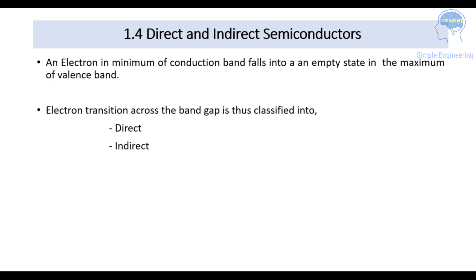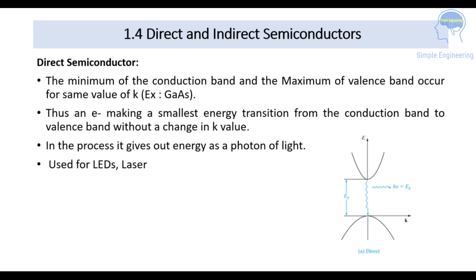In direct and indirect semiconductors, an electron at the minimum of the conduction band falls into an empty state at the maximum of the valence band. Electron transition across the band gap is classified into two types: direct semiconductor and indirect semiconductor. In a direct semiconductor, the minimum of the conduction band and the maximum of the valence band occur at the same value of k, the propagation constant. The electron makes the smallest energy transition from the conduction band to the valence band without any change in the k value.